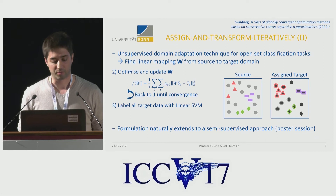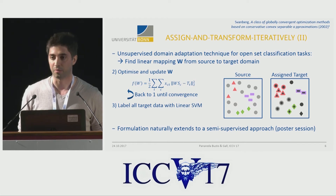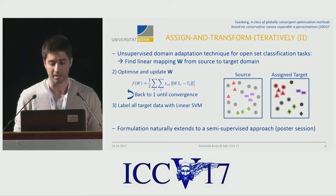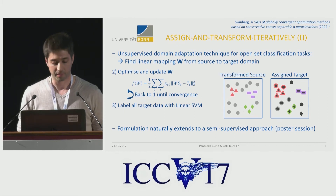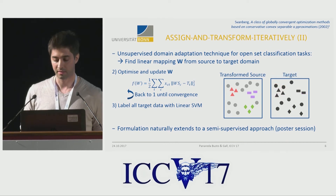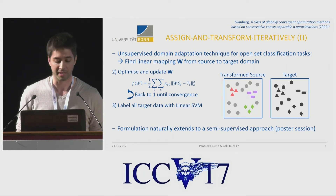The second step of our method is the computation of the transformation matrix from the source to the target domain. Using the assignments from the first step, we minimize this transformation — which means the outliers are not taken into account. Once we've transformed the source data, we go back to the first step, reset the assignments, and hoping that the transformation makes a better alignment, we again compute the assignment and go back to the second step, back and forth until convergence.